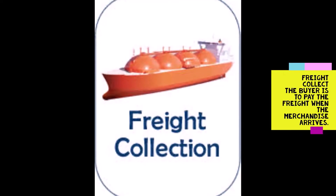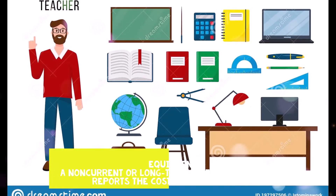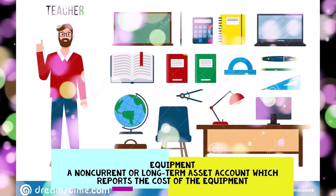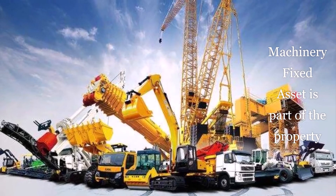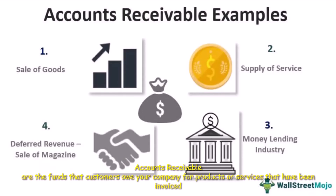Freight Collect: the buyer is to pay the freight when the merchandise arrives. Cash: medium of exchange in currency form. Equipment: a non-current or long-term asset account which reports the cost of the equipment. Accounts Payable: the amount owed for the purchase of goods or services at a specific date.